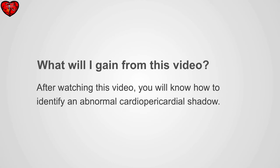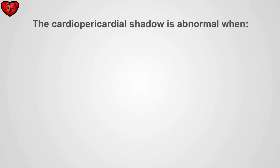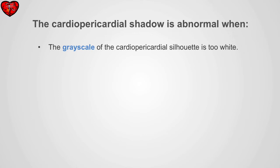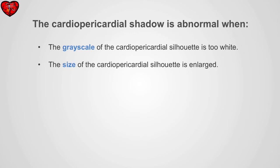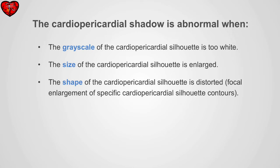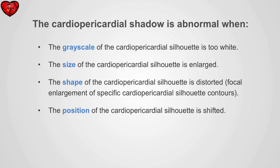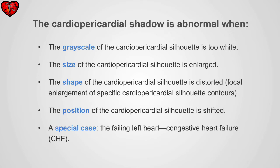After watching this video, you will know how to identify an abnormal cardiopericardial shadow. The cardiopericardial shadow is abnormal when the gray scale is too white, the size of the cardiopericardial silhouette is enlarged, the shape is distorted, the position is shifted, and in special situations when the heart is failing.